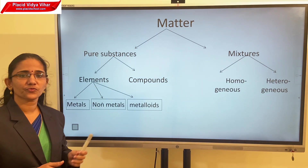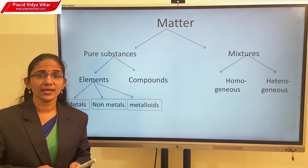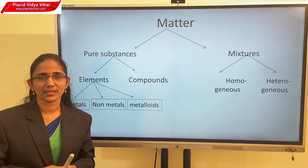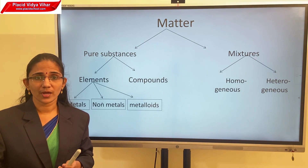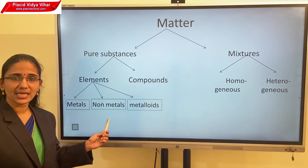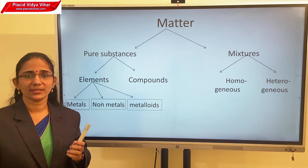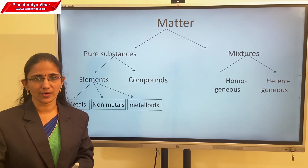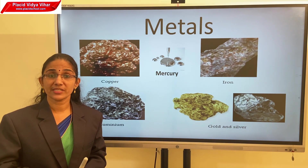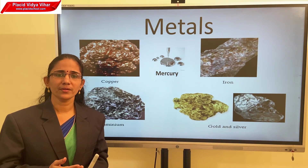Elements are again classified into three. Even though they contain the same type of atoms, their physical and chemical properties are different. That is why elements are classified into metals, non-metals and metalloids. Can you say some examples of metals which are familiar to you? Gold, silver, iron, copper, etc.